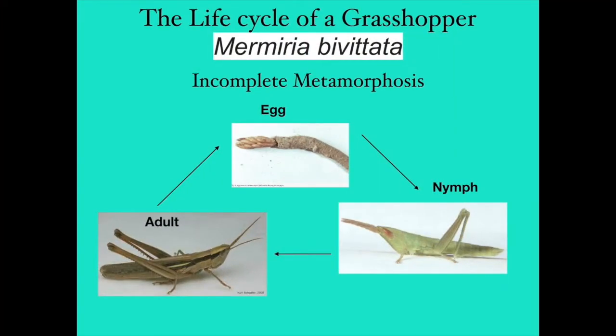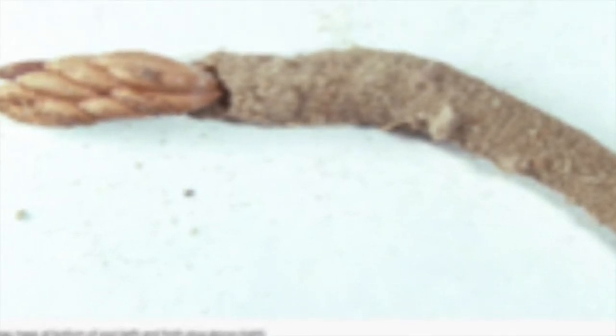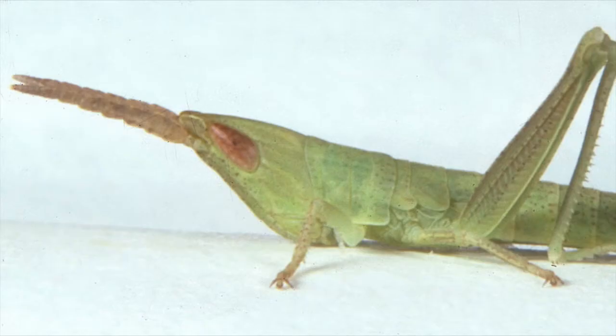Next, let's look at some features of insects. These features make insects unique. Many different insects have different life cycles. There are two major types of life cycles. The simple or incomplete life cycle of a two-striped grasshopper includes three stages.